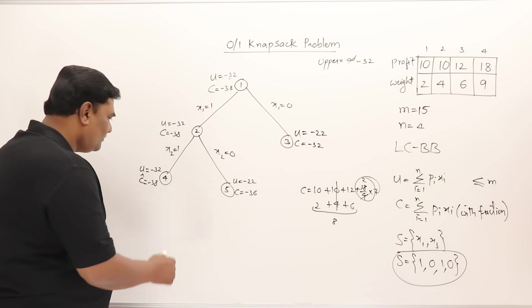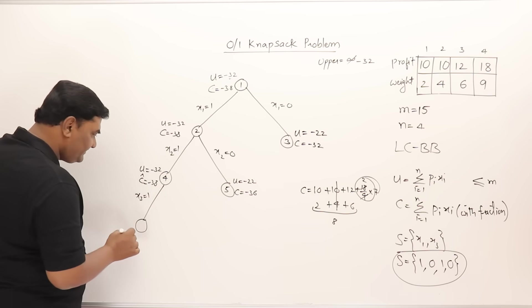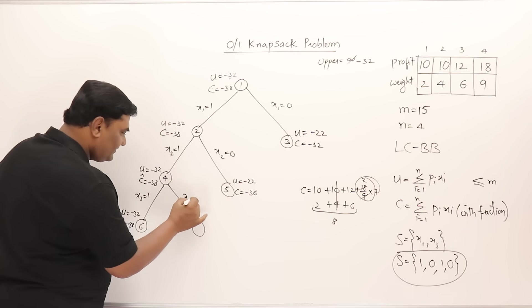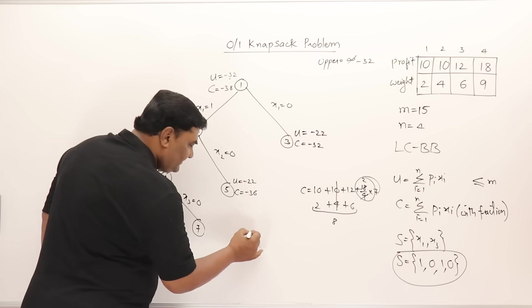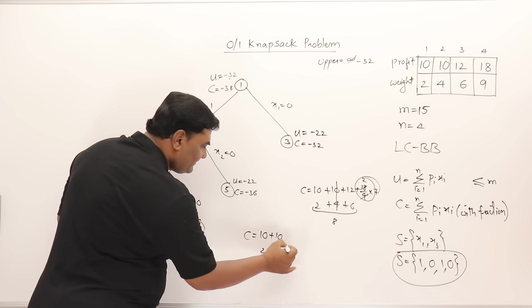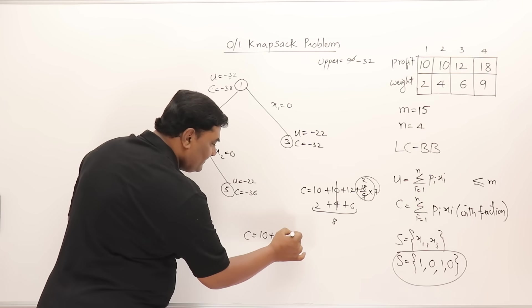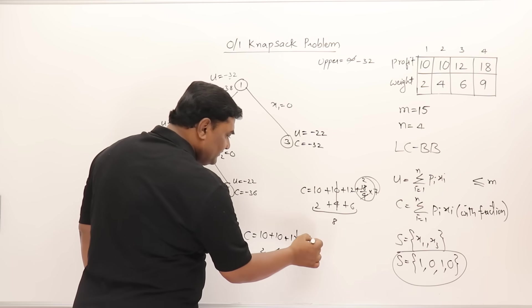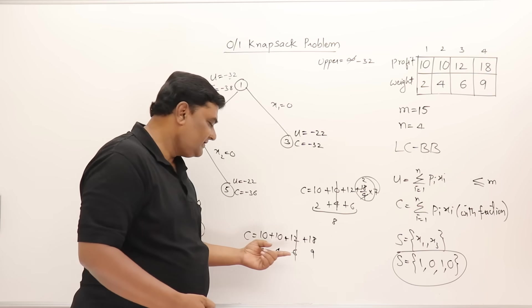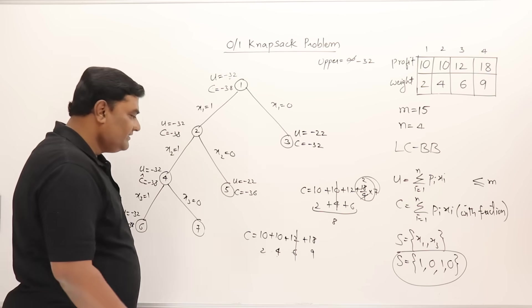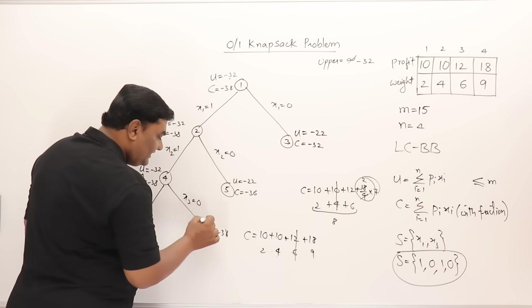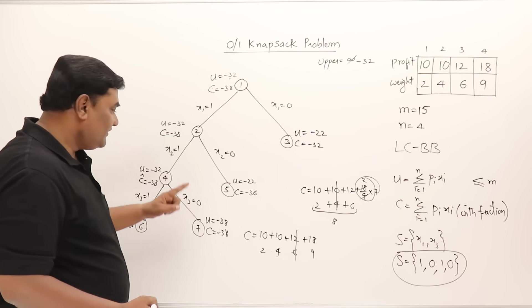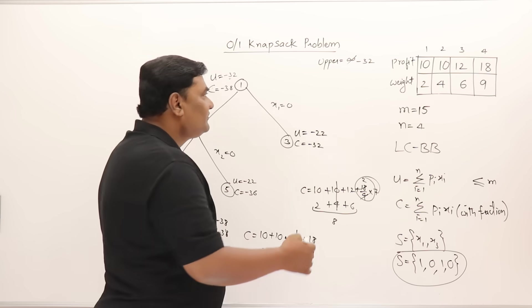Below the -38 node, third object included: cost remains the same. For third object not included: first and second objects included (weight 6), then fourth object (weight 9) is included — total weight 6 + 9 = 15, exactly filling the bag. Cost = -(10 + 20 + 18) = -38. Upper bound = -38 (no fractions needed). We got a smaller upper bound, so we update upper to -38.